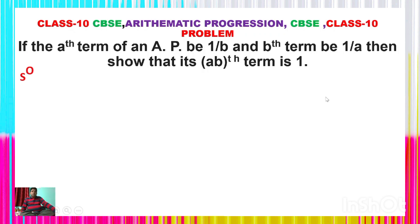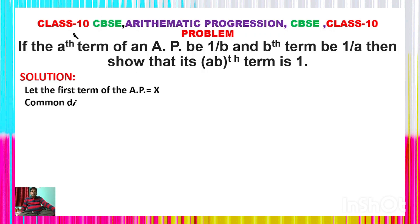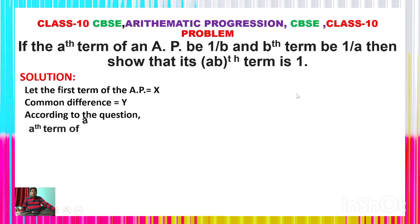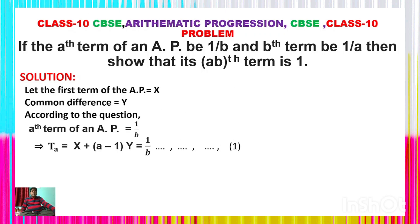Look at the solution here. Let the first term of the AP be x and the common difference be y. So according to the question, the ath term of the AP is 1/b, which means t_a = x + (a−1)y = 1/b according to the formula.